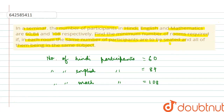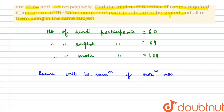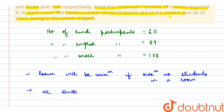The number of rooms will be minimum if the maximum number of students are seated in a room. The second condition is that all students in a room must be from the same subject.